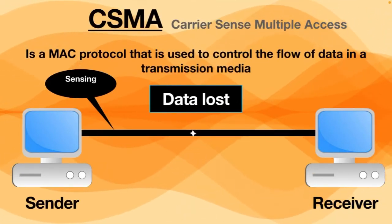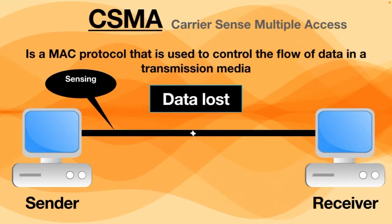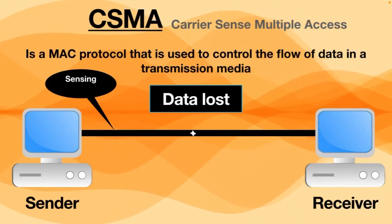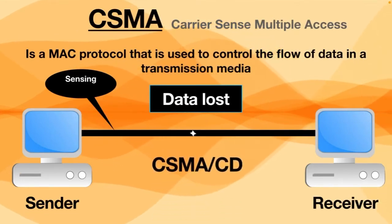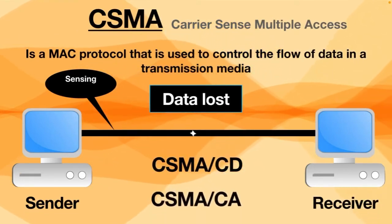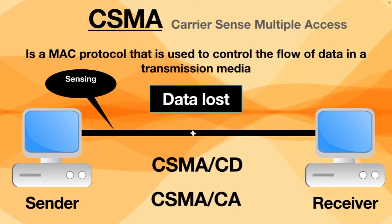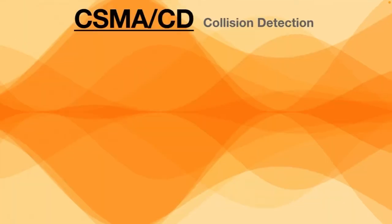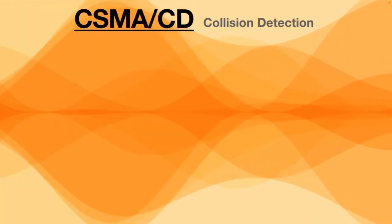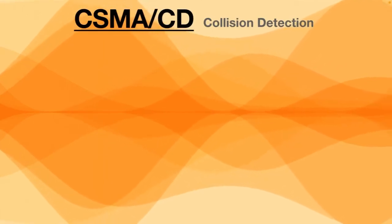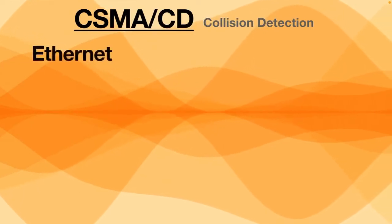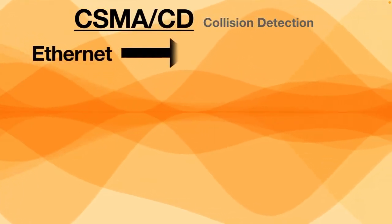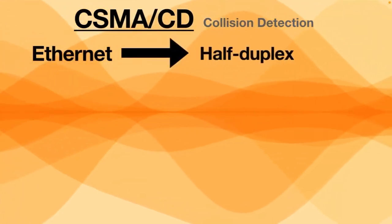The lost information needs to be resent so that the receiver can get it. Therefore we need to sense the medium before transmitting data packets on a network. To do this we use two different protocols: CSMA/CD (Collision Detection) and CSMA/CA (Collision Avoidance). CSMA/CD was used in slower and less complex early networks such as Ethernet, which were half-duplex — devices could only send or receive data in one direction.